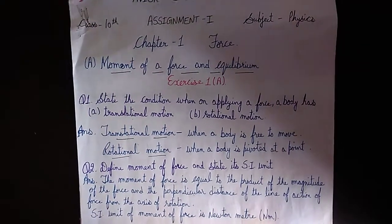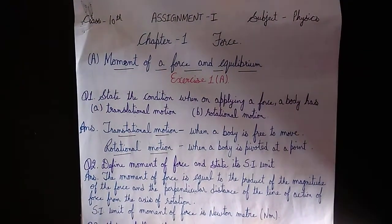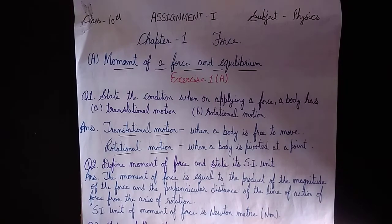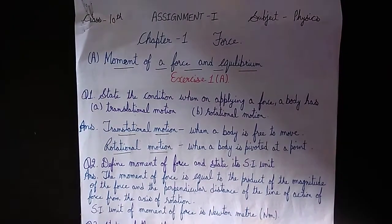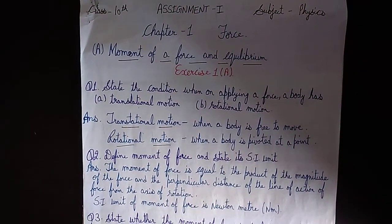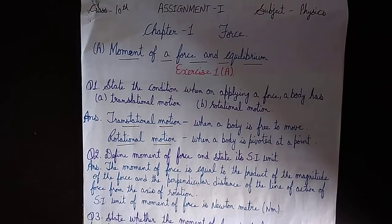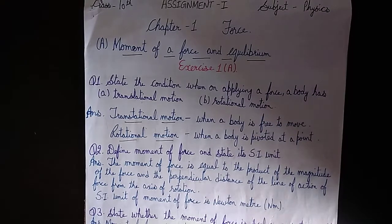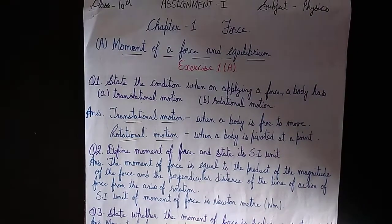Your first question is: state the condition when, on applying a force, a body has translational motion or rotational motion. The condition for translational motion is when the body is free to move, and for rotational motion, the body is pivoted at a point.